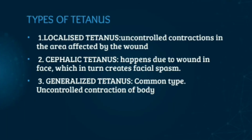There are mainly three types of tetanus. First, localised tetanus, which is fairly rare and rarely fatal — it involves uncontrolled spasm confined to the area of the wound. Second, cephalic tetanus, which happens due to a wound in the face, creating facial spasms. Third, generalised tetanus, which is the most common type, involving uncontrolled spasm of the entire body. In tetanus, hands and feet are spared and deep tendon reflexes are exaggerated.